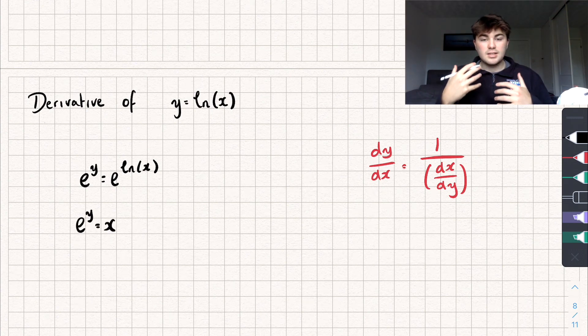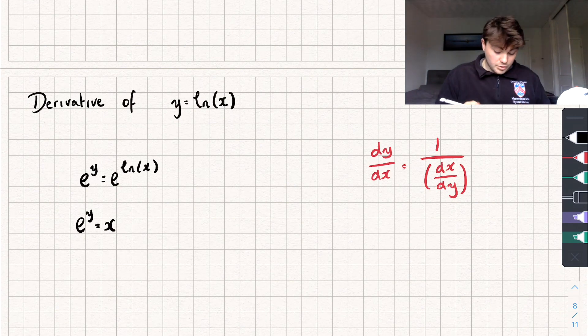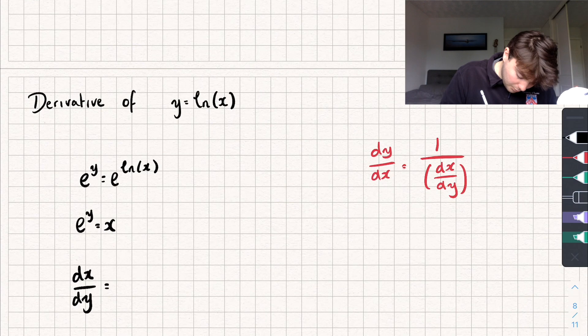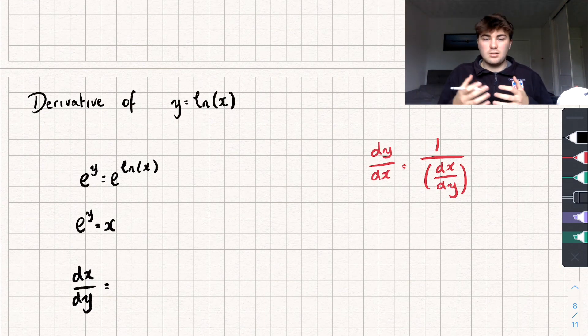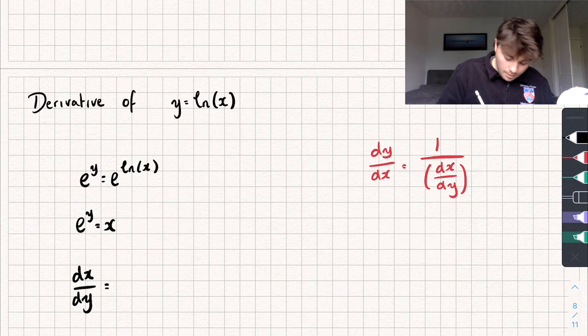So now I've got this, I'm going to take the derivative of x with respect to y. So we get dx by dy equals, well the derivative of e to the y is just e to the y, right? The same as e to the x is its own derivative, so is e to the y. And so we get e to the power of y.